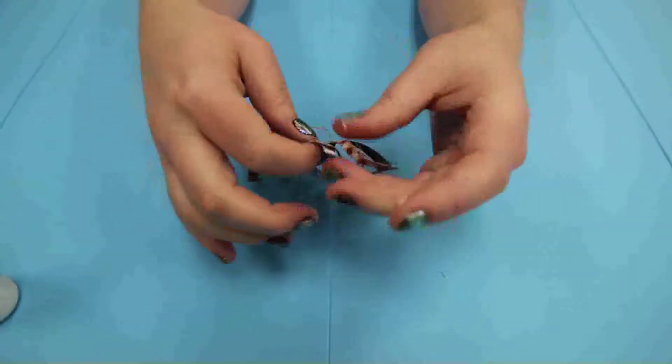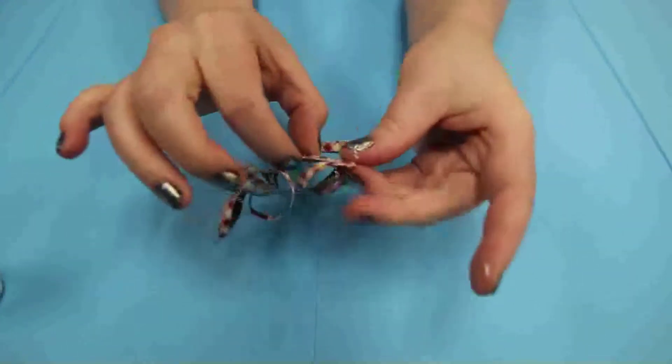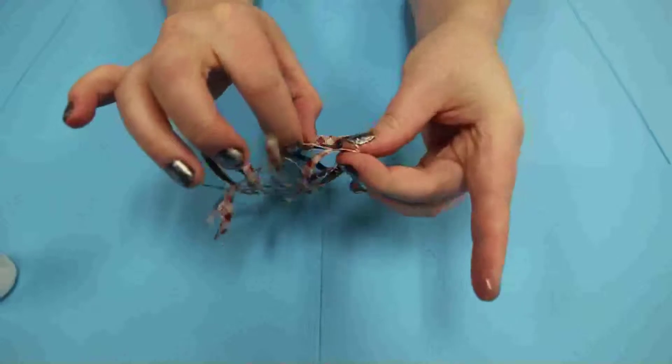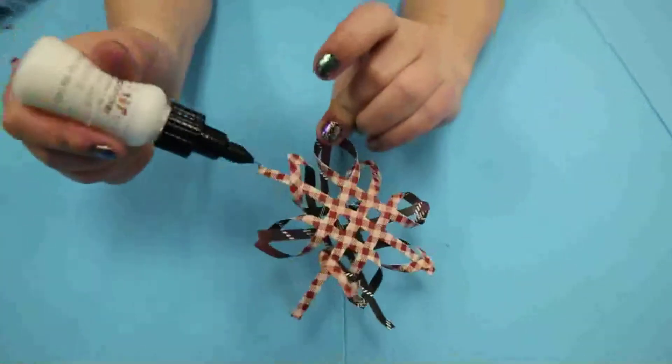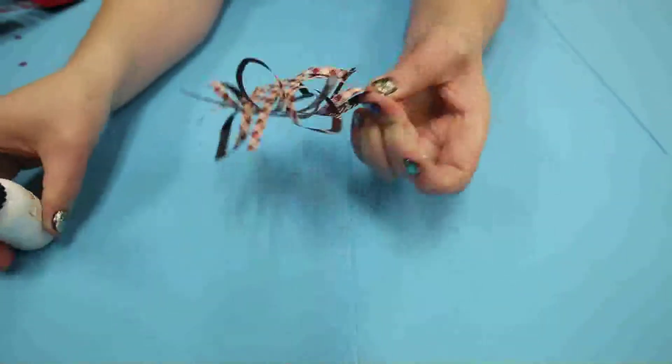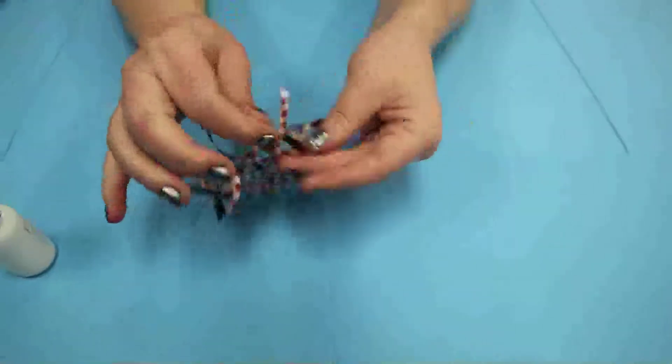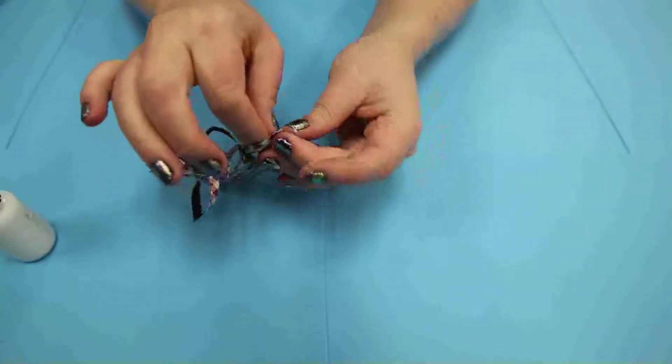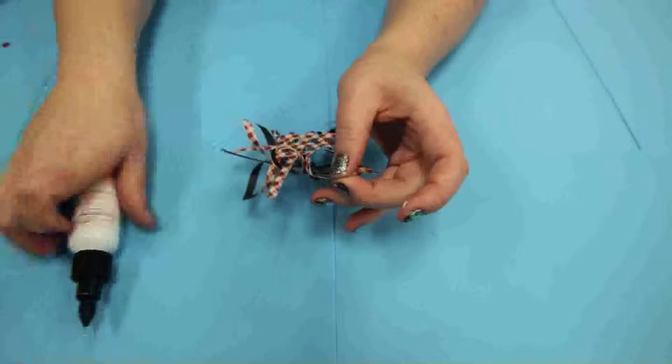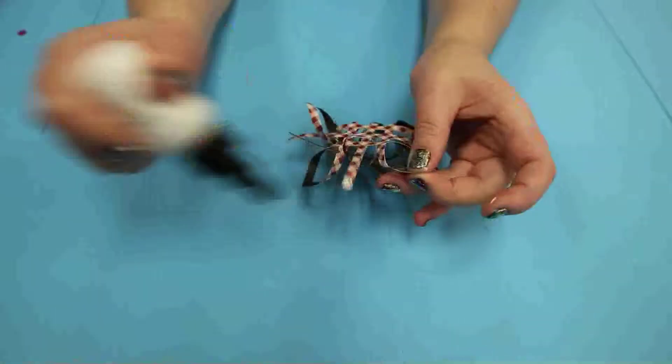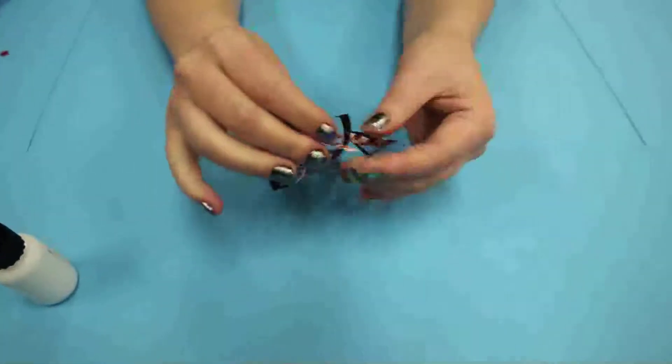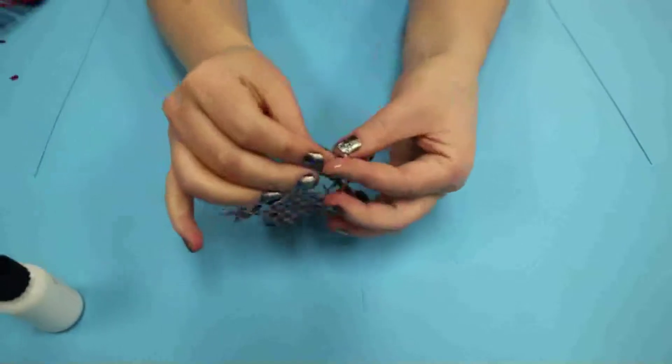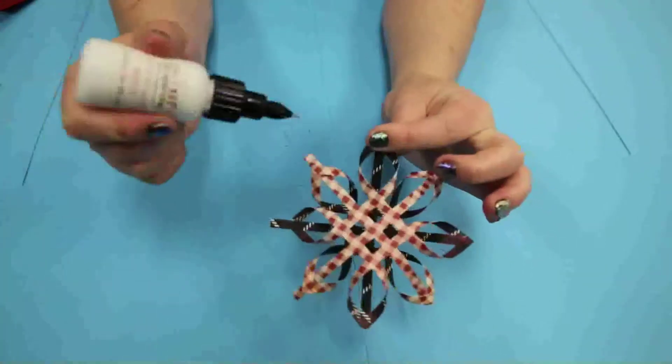You might get a little glue on your fingers, but that's okay. It all washes off. This glue bottle is perfect for it because it does not drench your project in liquid glue.